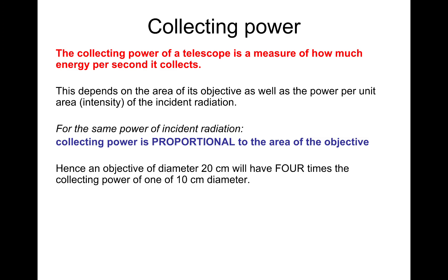Hence, an objective diameter of 20 centimeters will have four times the collecting power of one of 10 centimeter diameter. It will also have twice the resolving power, which is the Rayleigh criterion, which we did last lesson. So the collecting power, CP, is directly proportional to D-squared. So if you double the diameter, you'll get four times the collecting power. It's important that you remember that one.